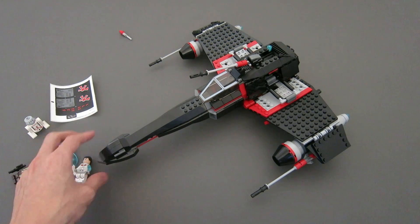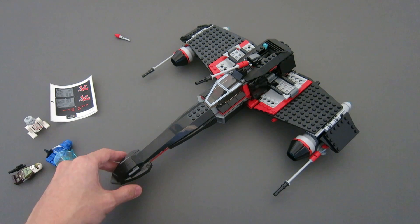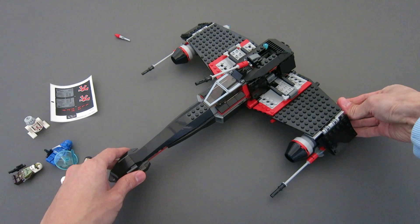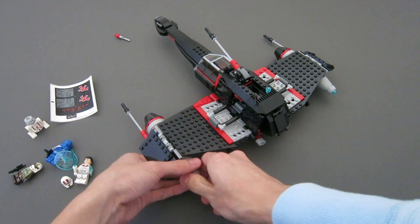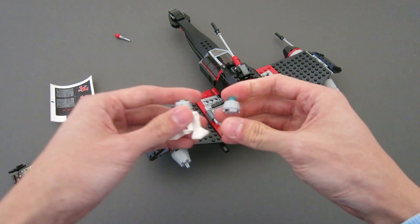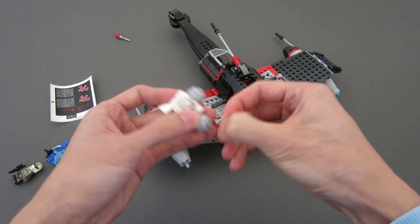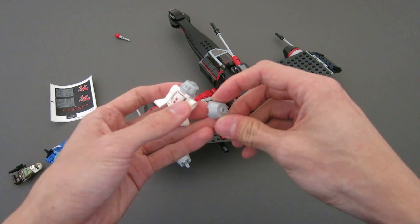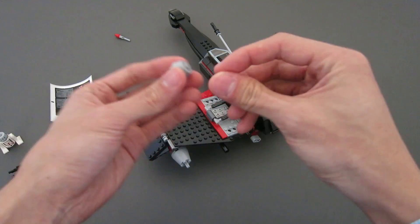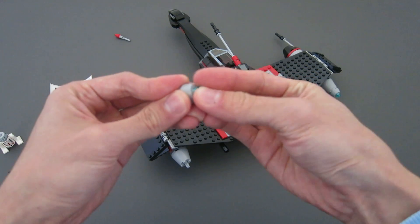This is the model with all its play features. Piece-wise, there aren't that many great pieces. This one in particular I do like—this is an unprinted version of the astromech head, so very useful if you are a space builder. Some good details to be made with this piece.